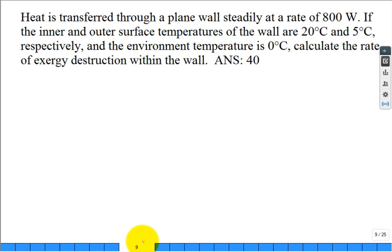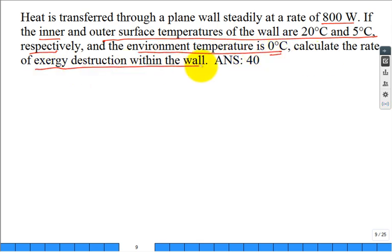Another problem: heat is transferred through a plain wall steadily at a rate of 800 watts. If the inner and outer surface temperature of the wall are 20°C and 5°C, respectively, and the environmental temperature is 0°C, calculate the rate of exergy destruction within the wall.